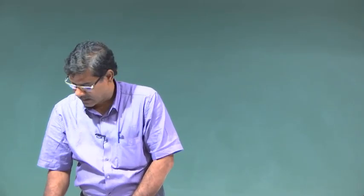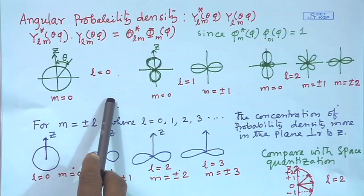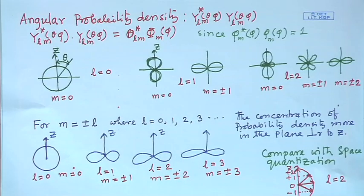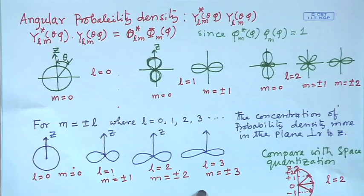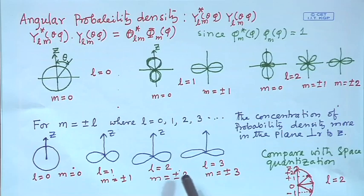In the second part I was discussing the angular distribution — the angular probability density — and I have shown how this angular probability density varies for different values of L and M. This is the directionality of the electron density in the atom, and these are very useful in chemistry for the form of bonding. When different atoms form molecules, the angular variation of probability density explains the form of bonds in molecules.